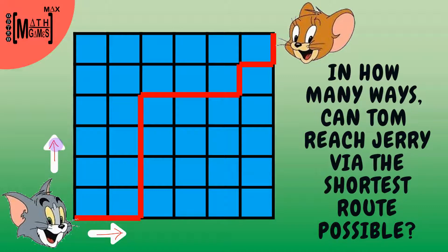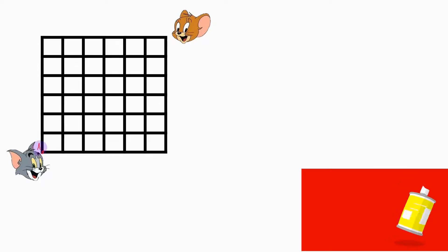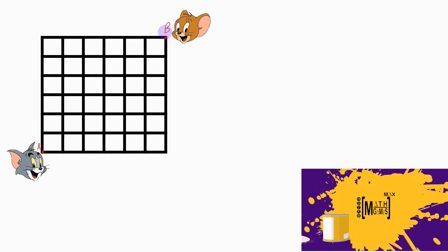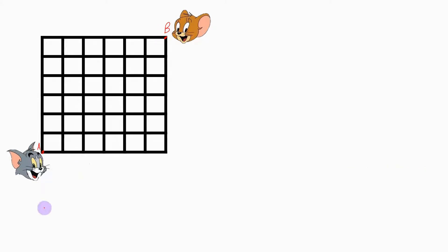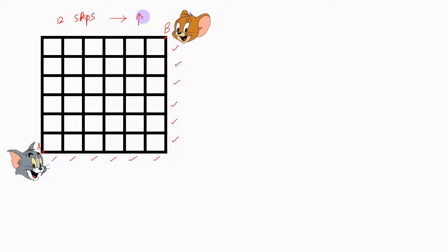Now let us get started. Suppose that Tom is at point A and Jerry is at point B, and Tom has to go from point A to point B via the shortest distance possible. Tom needs to travel 6 steps in this direction and again 6 steps in this direction, so Tom needs to travel a total of 12 steps — 6 steps horizontally and 6 steps vertically.